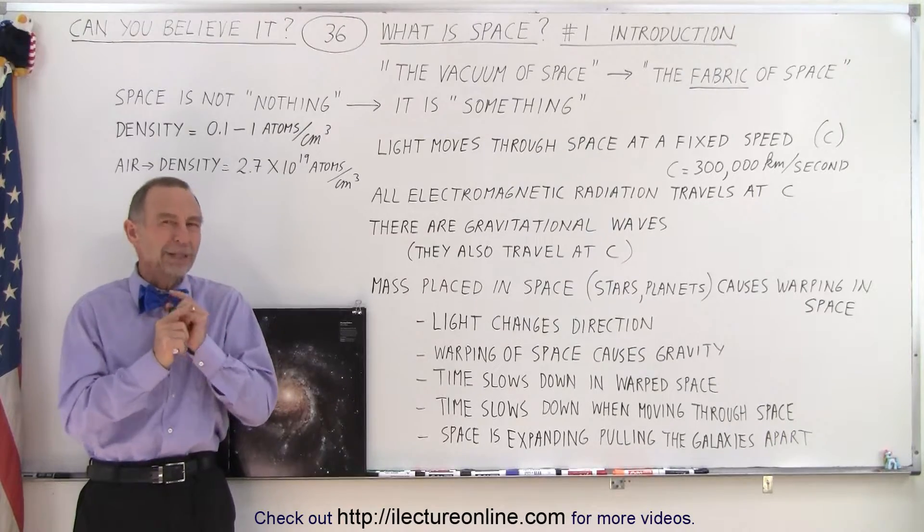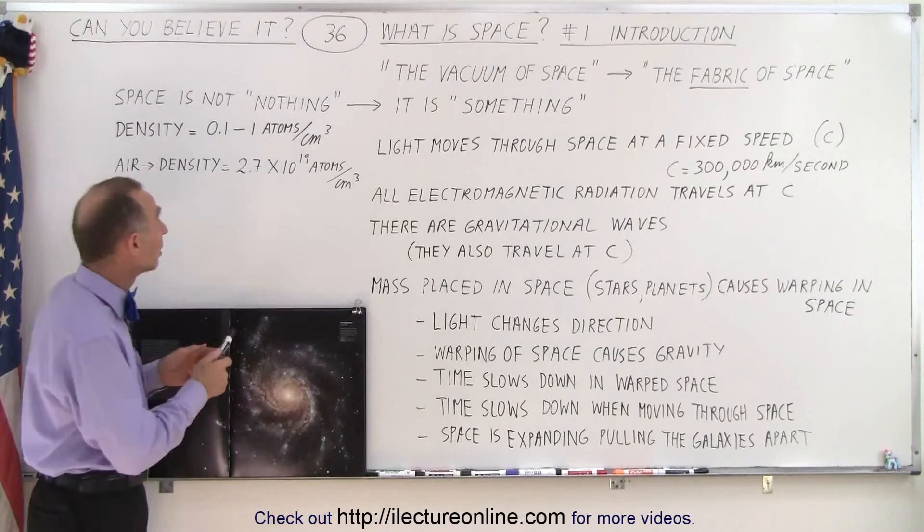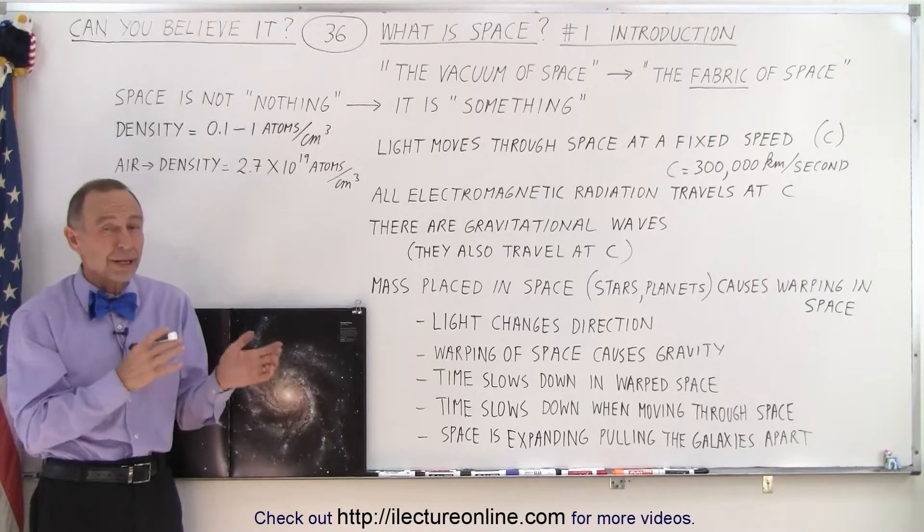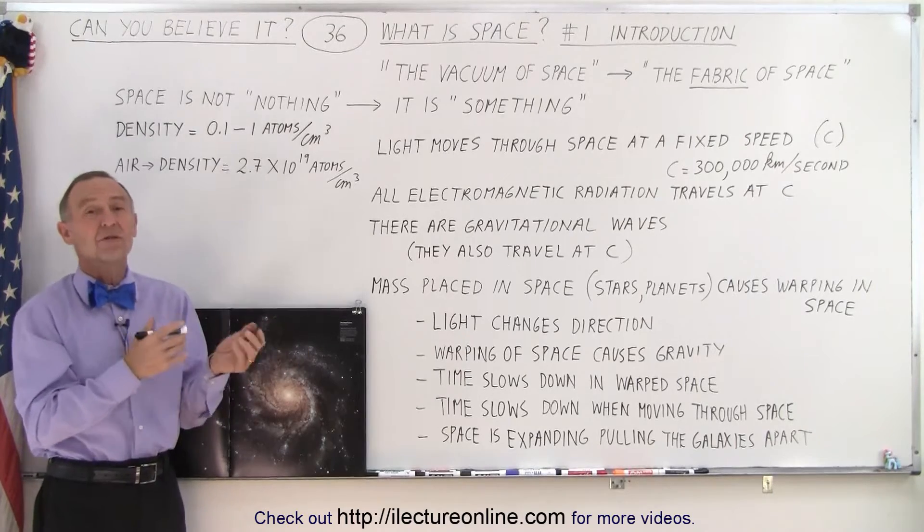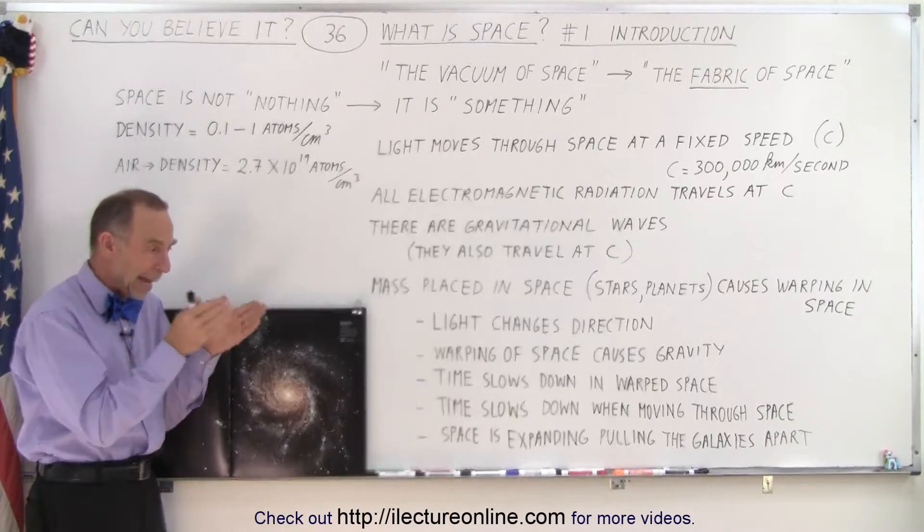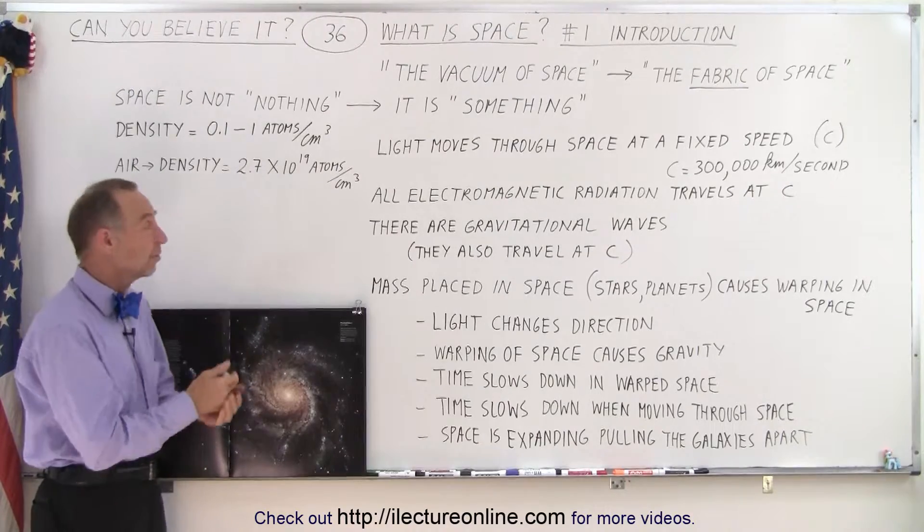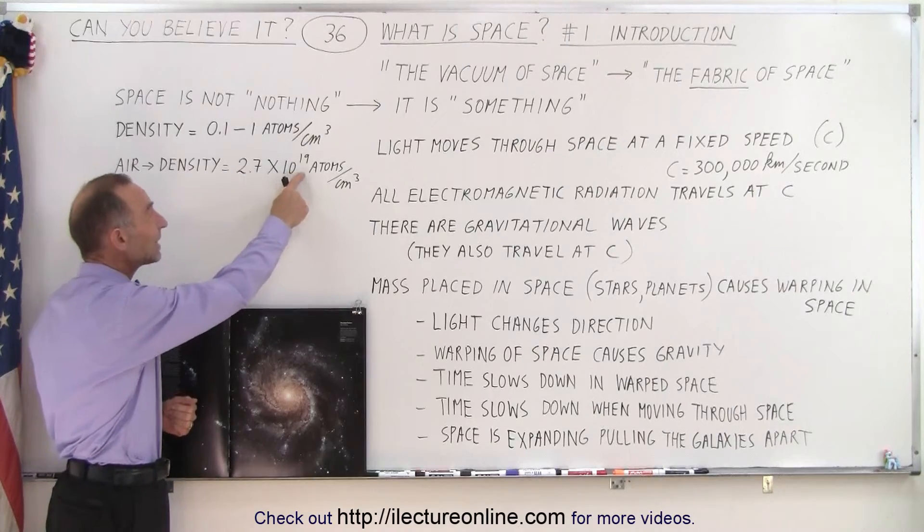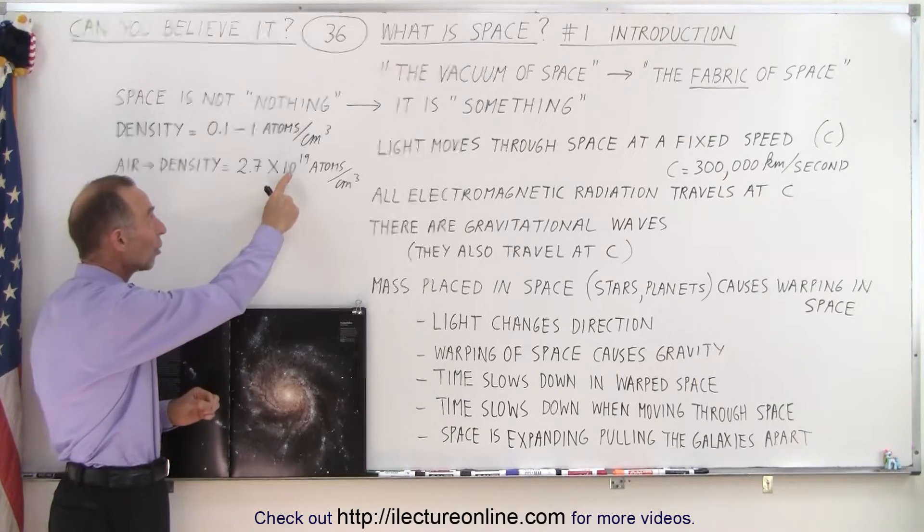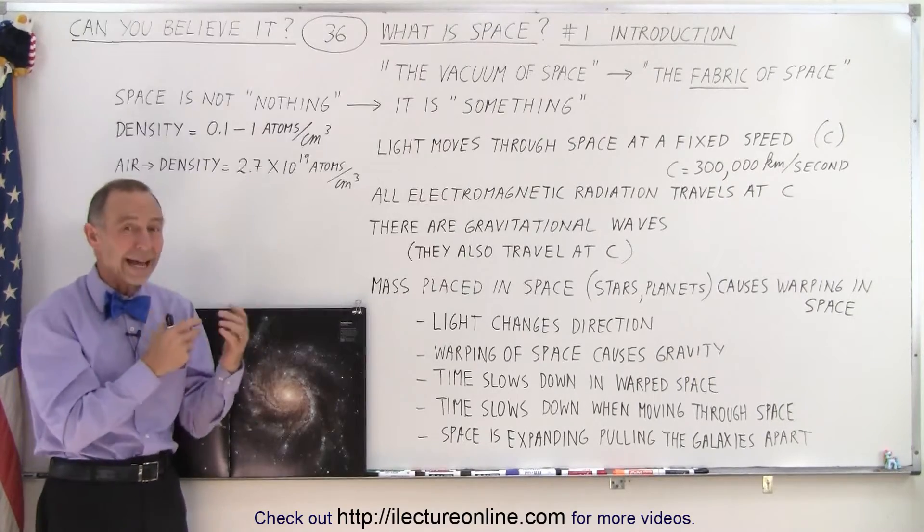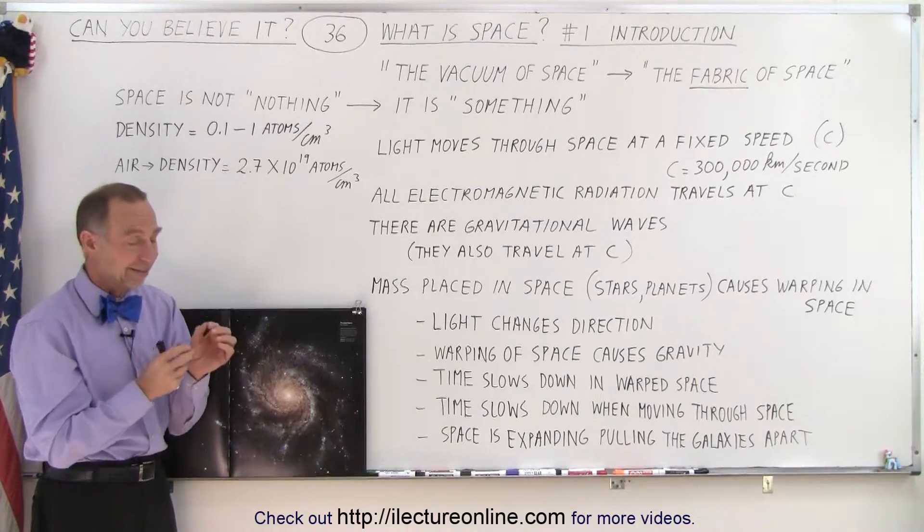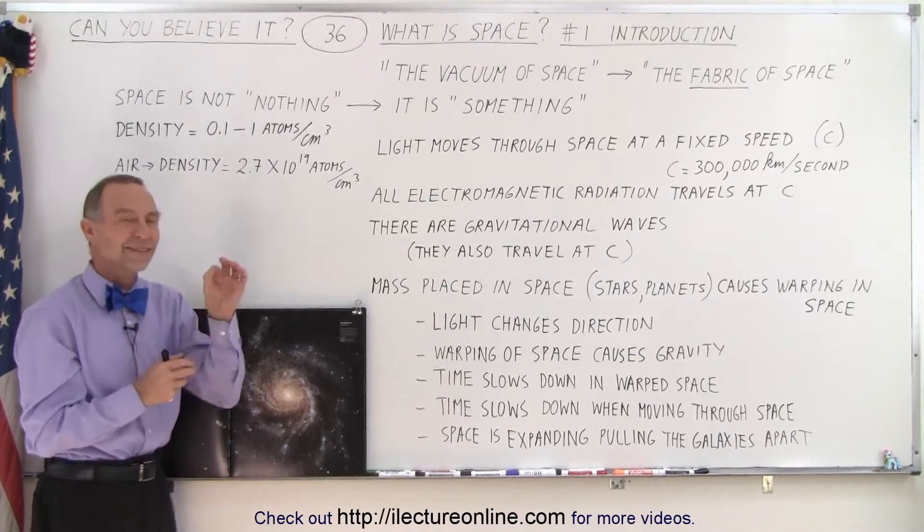Now space is not a complete vacuum. For example, the density is about 0.1 to 1 atoms per cubic centimeter, depending upon which research team you listen to. But let's say it's one atom per cubic centimeter. Well, in the air here on the surface of the earth, in the atmosphere, we have 2.7 times 10 to the 19 atoms per cubic centimeter of air. So every cubic centimeter of air contains almost 10 to the 20th atoms. And so when you talk about one atom per cubic centimeter, well, that's virtually nothing, but it's still something.